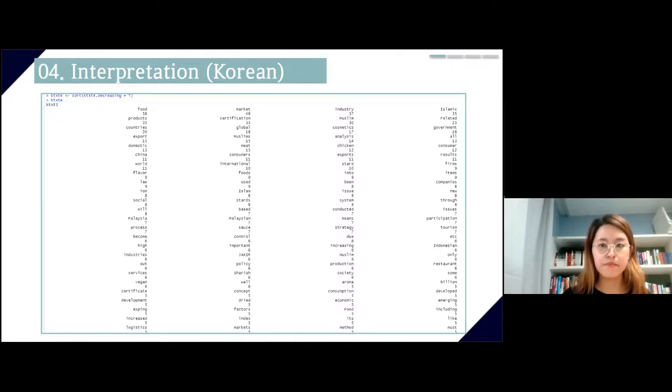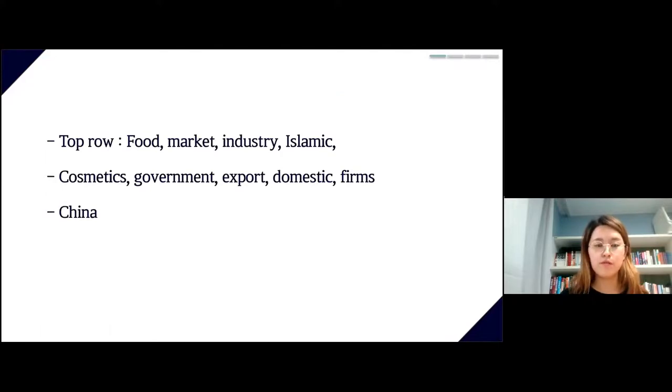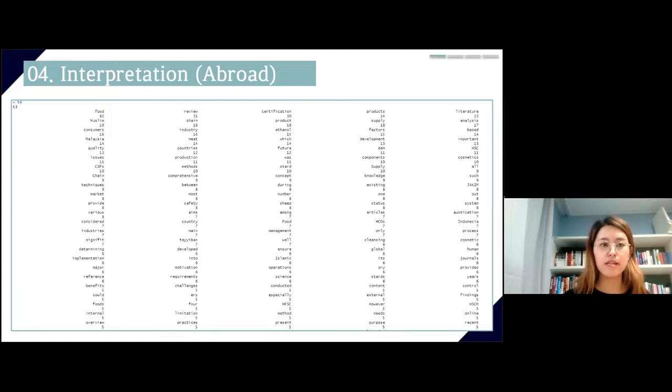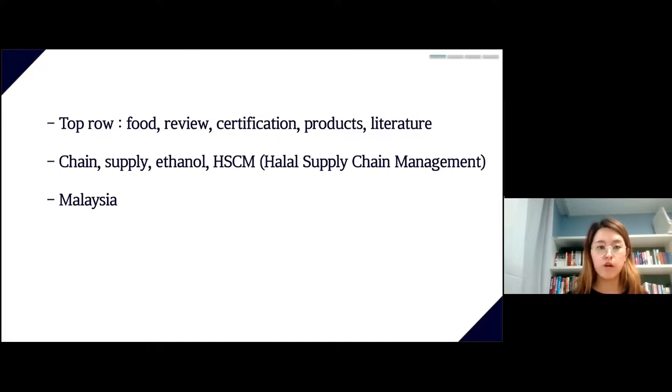For Korean, the top row was food, market, industry, and Islamic. Significant words included government with 60 mentions, export with 50, domestic with 13, firms with 9. Unexpectedly, China was the most mentioned country in Korean research, even more than Malaysia.